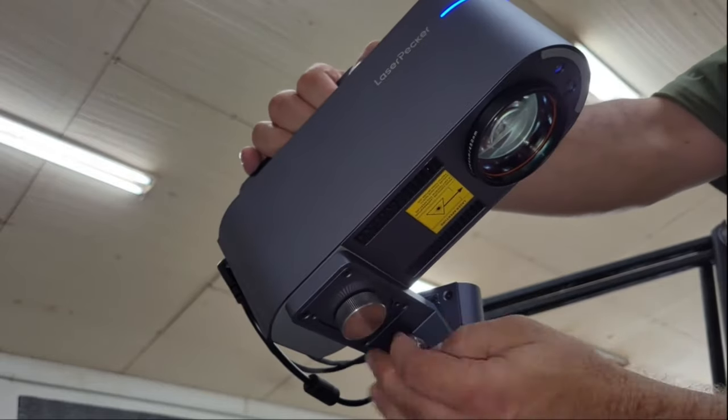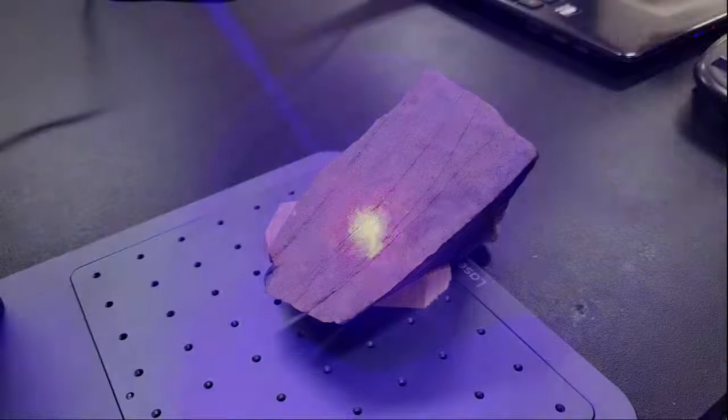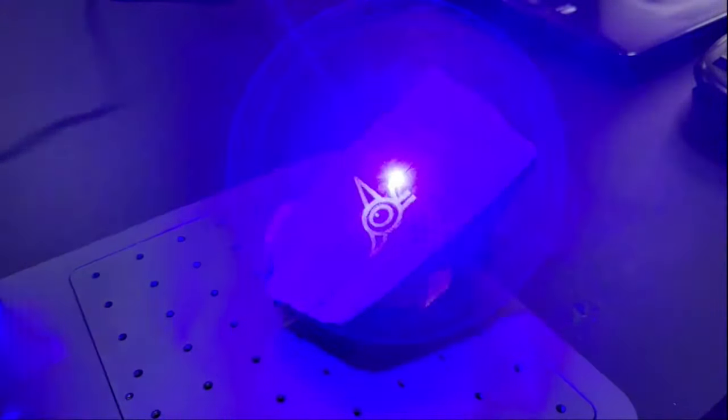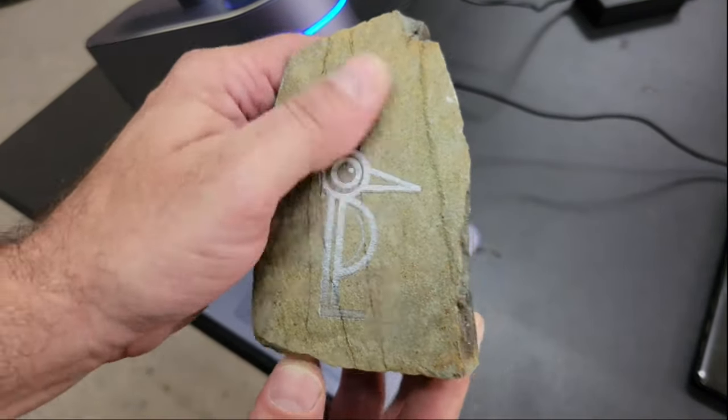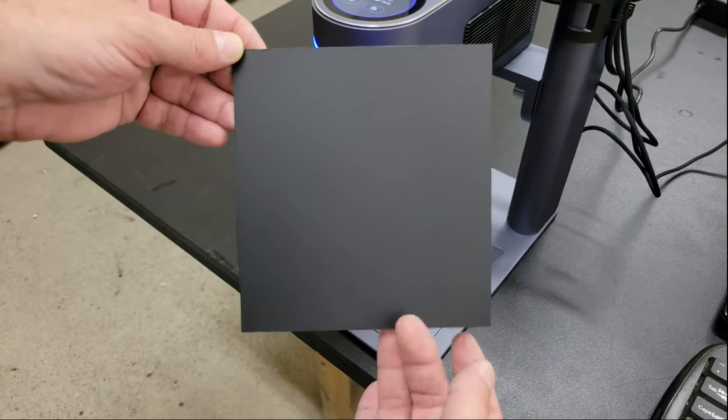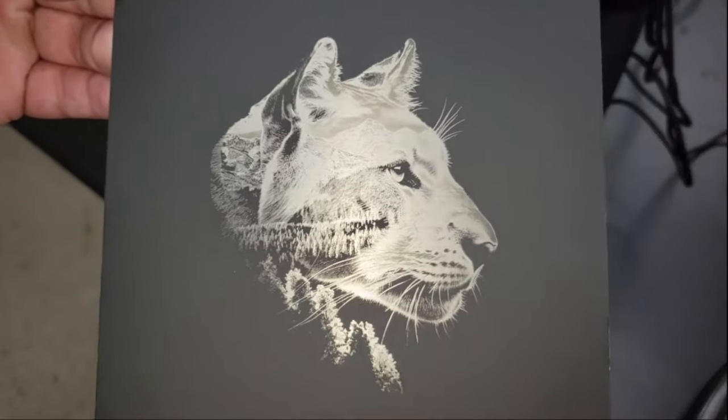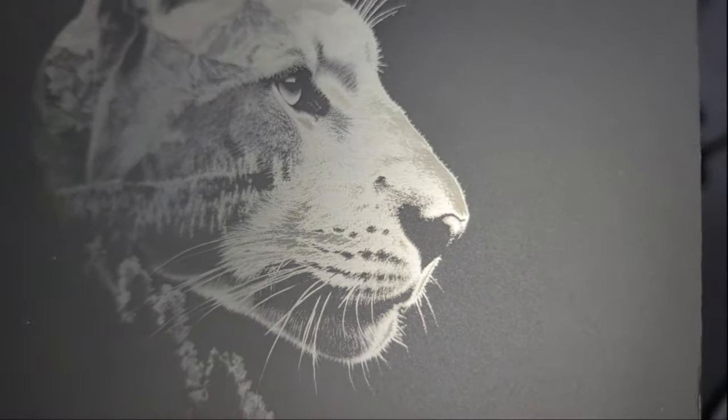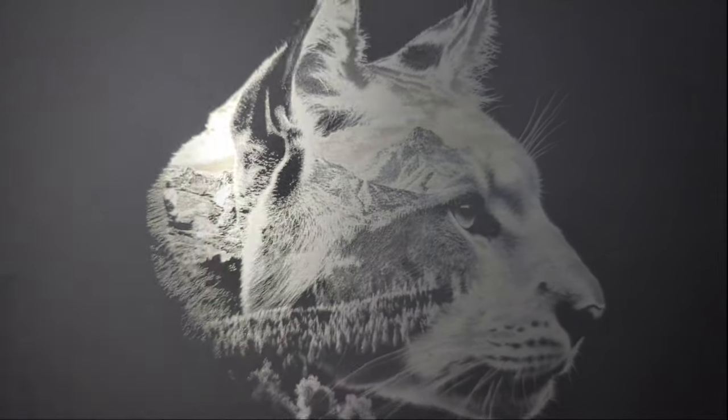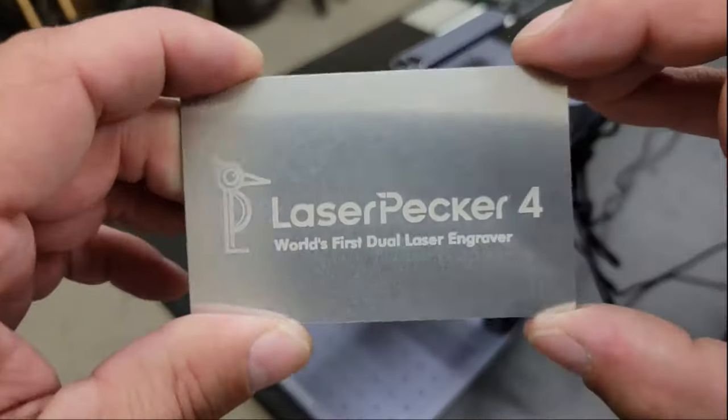Just like the LP2 and LP3, the LP4 can angle engrave by adjusting the angle of the module mounting bracket. Unlike the LP2 and the LP3, the LP4 can engrave images in 8K resolution like this cougar that I etched into a sheet of coated aluminum. Of course the infrared laser can engrave almost any metal or plastic just like the LP3.